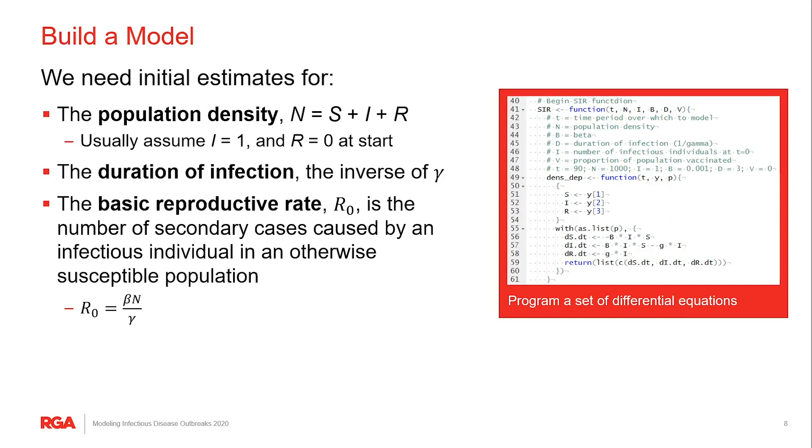To actually build the model of an outbreak, we need to estimate the initial values for beta, gamma, and S. And then we set up a set of differential equations that mimic the flow of individuals from one compartment to the next.